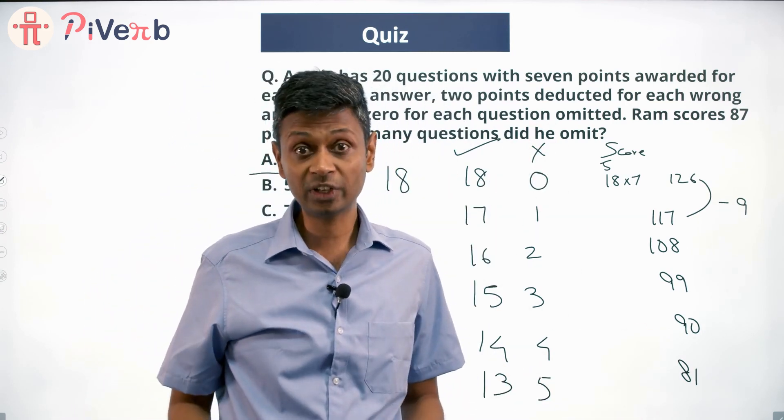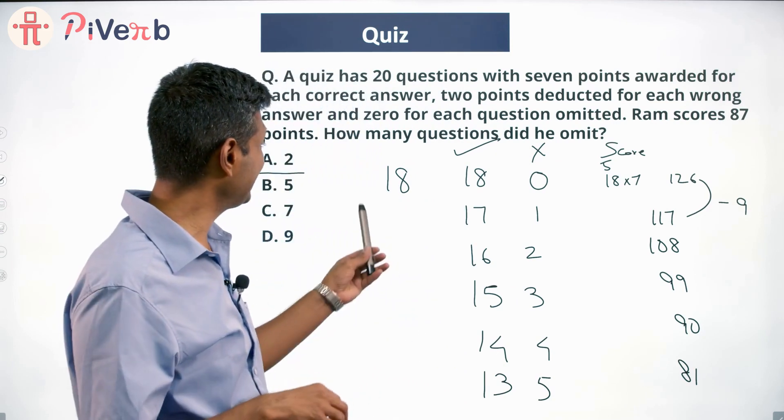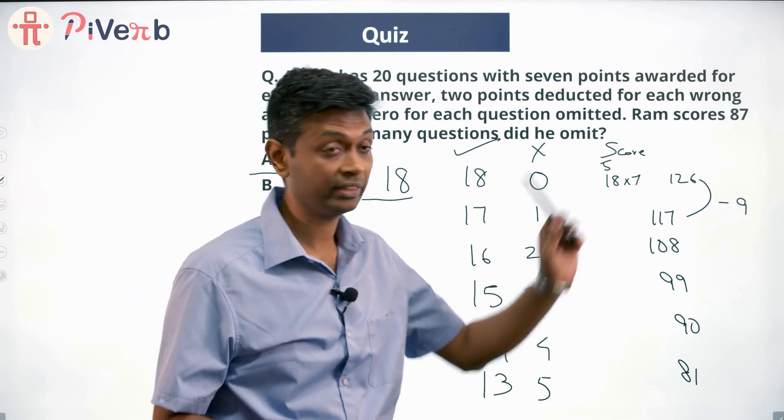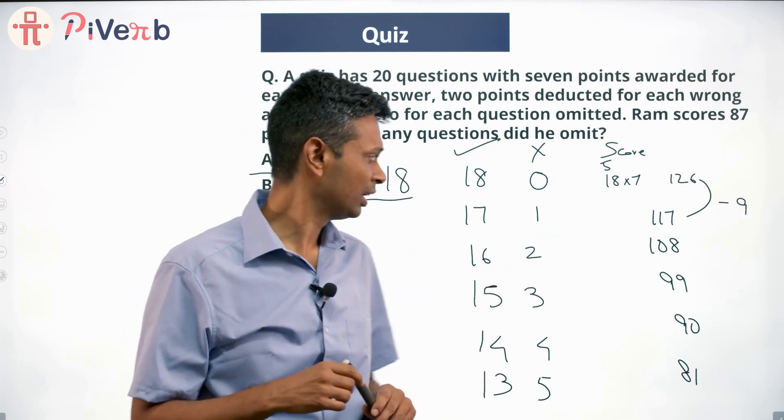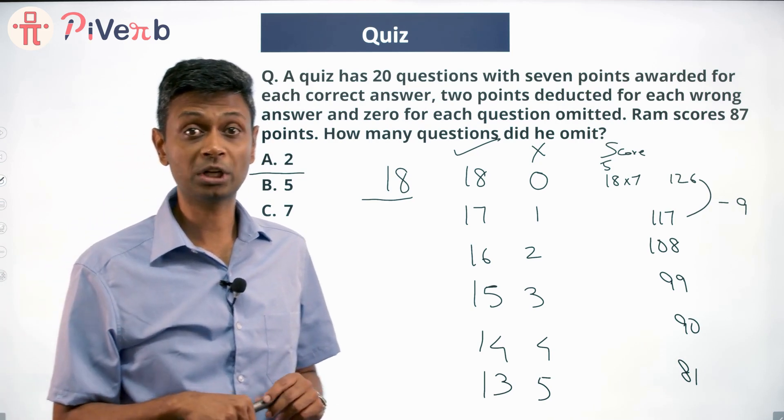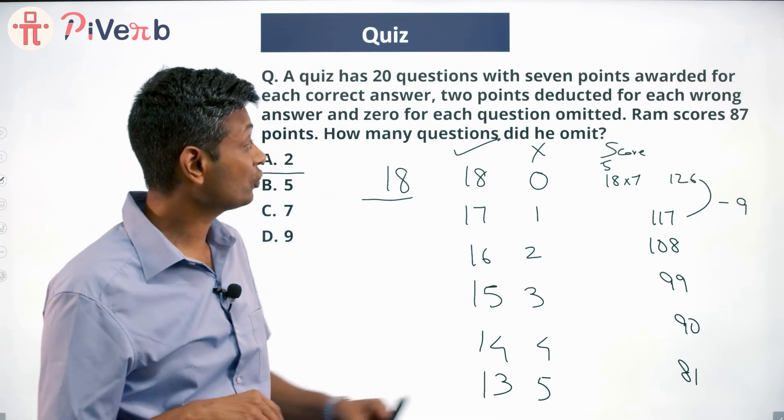87 does not sit on this list. So I straight away know if he had attempted 18 questions totally, it is impossible to get a total of 87. 87 is not possible.